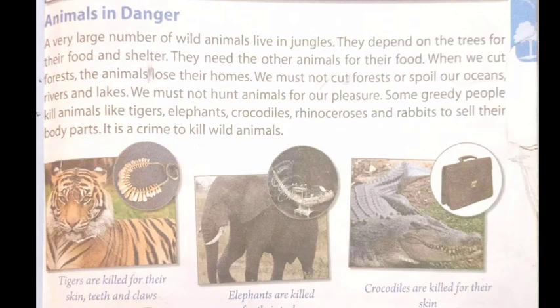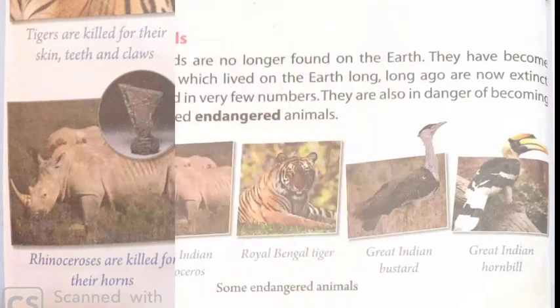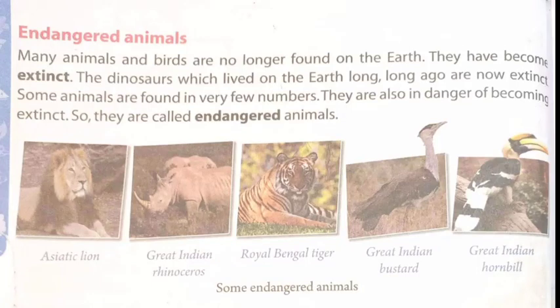As shown in the pictures: tigers are killed for their skin, teeth and claws; elephants are killed for their tusks; crocodiles are killed for their skin; rhinoceros are killed for their horns.